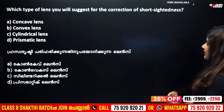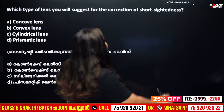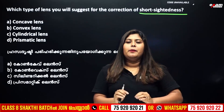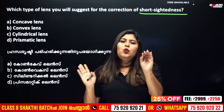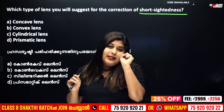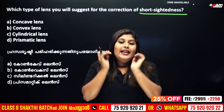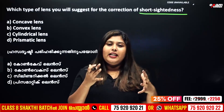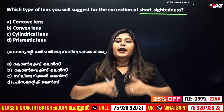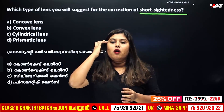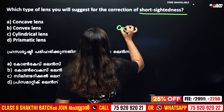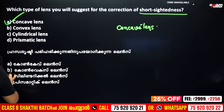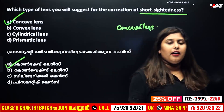What type of lens is suggested for the correction of short-sightedness? In short-sightedness, the image is focused in front of the retina instead of on it. We use a concave lens to correct short-sightedness. Convex lens is used for long-sightedness.